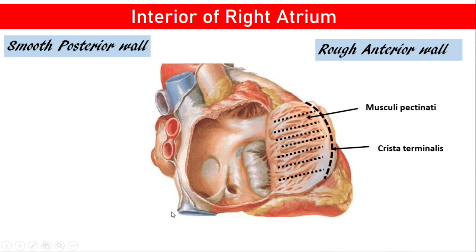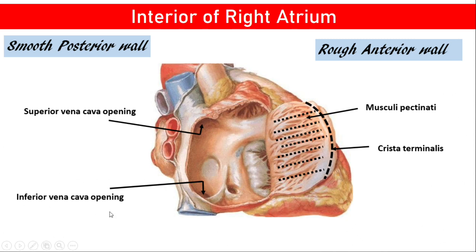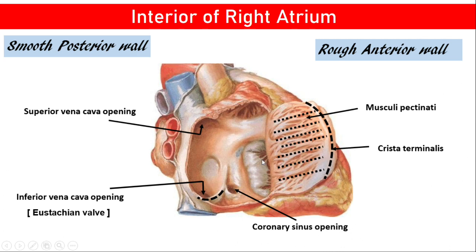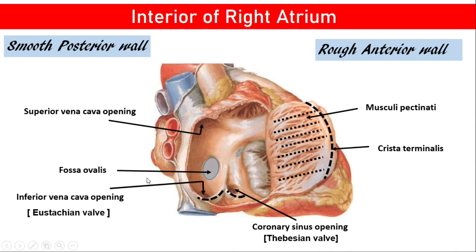In the posterior smooth wall, we will see a number of openings. In the upper and posterior part, you will see the opening of the superior vena cava. In the lower and posterior part, you will see the opening of the inferior vena cava, guarded by the Eustachian valve — in fetal life, this valve guards blood flow from the right atrium to the left atrium. The third opening is the coronary sinus, which opens between the inferior vena cava and the tricuspid valve, guarded by the Thebesian valve. You will also see an oval-shaped impression on the septal wall — the fossa ovalis, derived from the septum primum. Above it is a thick ridge known as the limbus fossa ovalis, derived from the septum secundum.